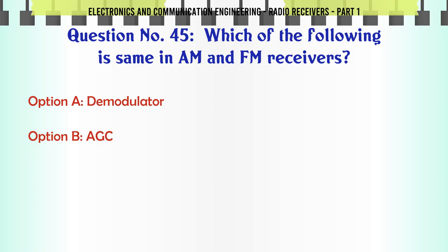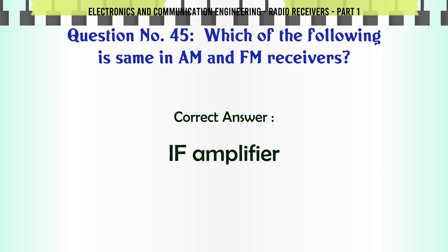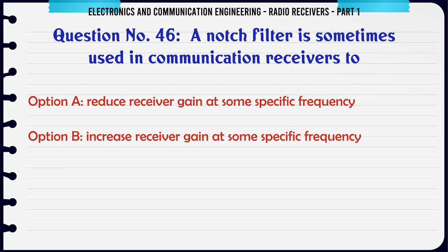Which of the following is the same in AM and FM receivers? A. Demodulator. B. AGC. C. IF amplifier. D. All of the above. The correct answer is IF amplifier.